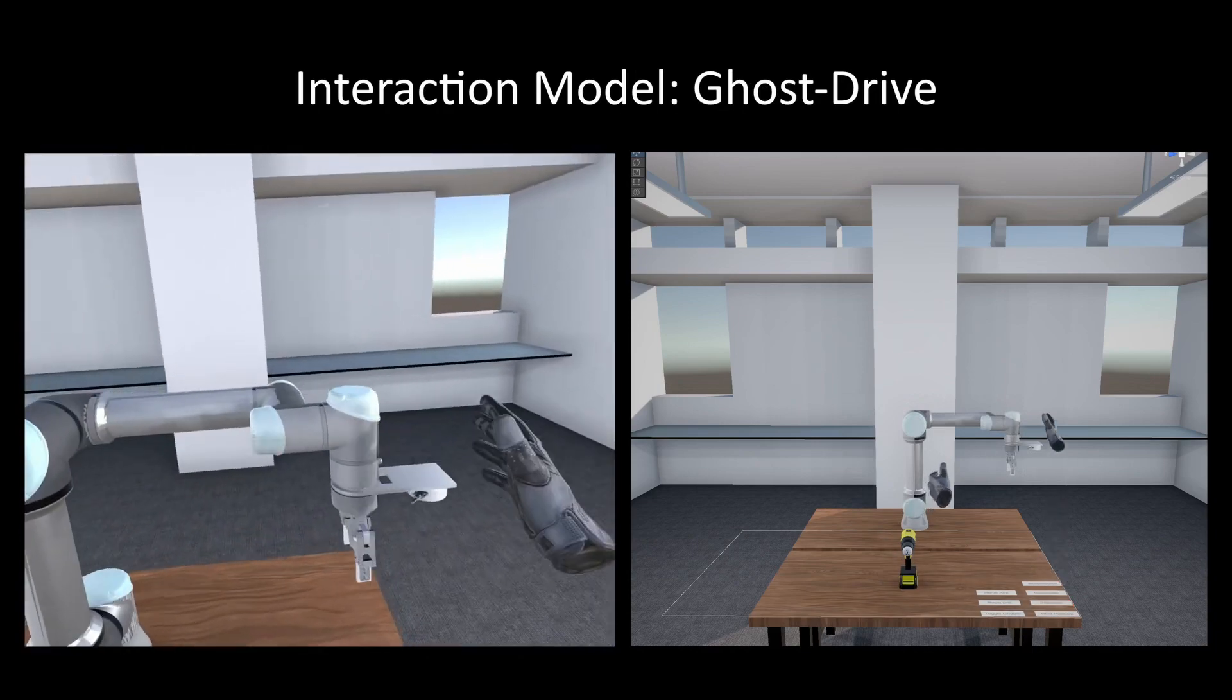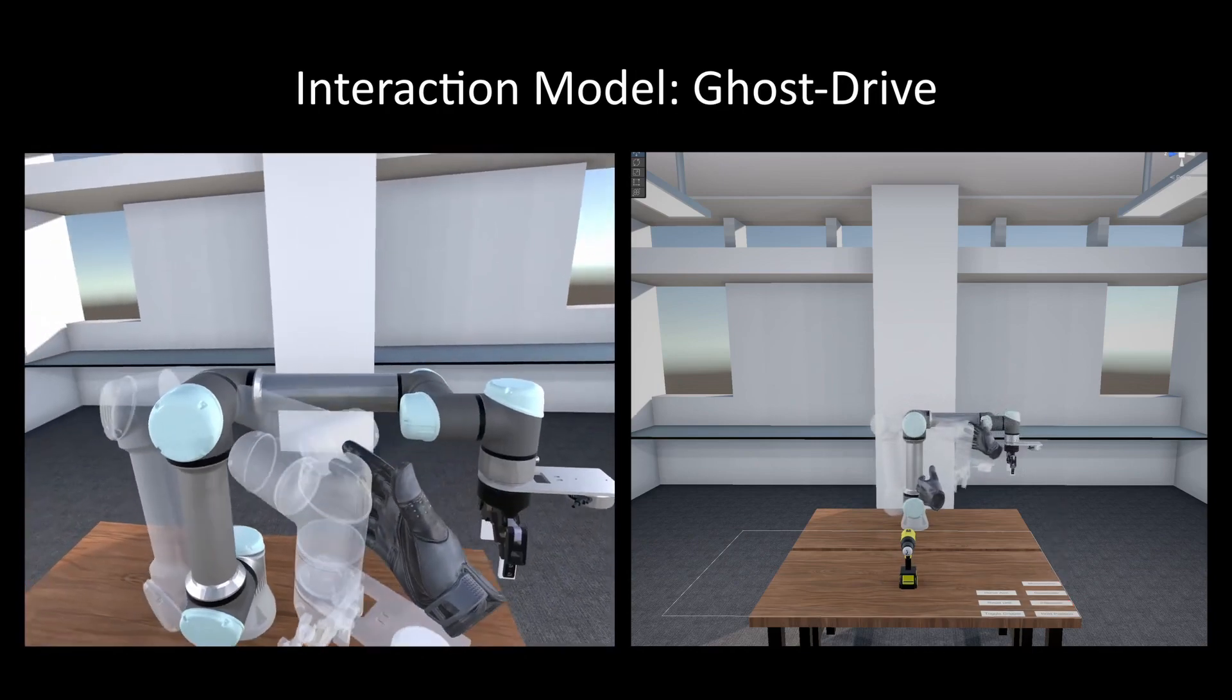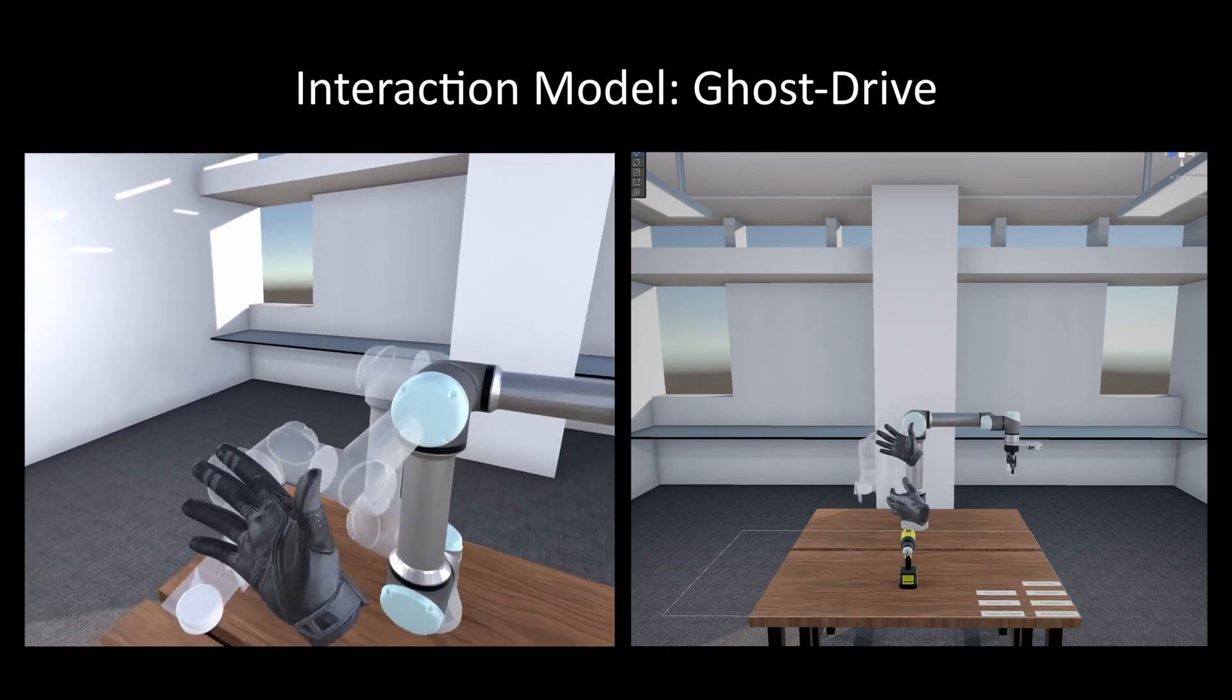In Ghost Drive, the operator can specify end position without affecting the robot. Motion planning can then be delegated to MoveIt.